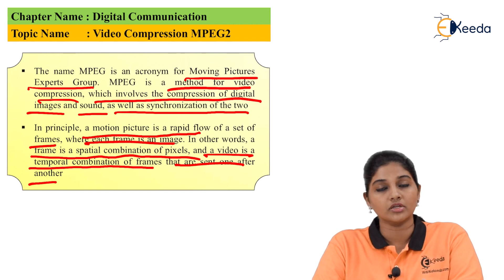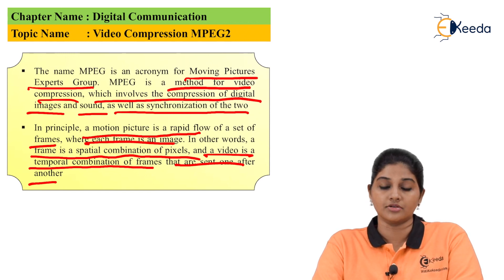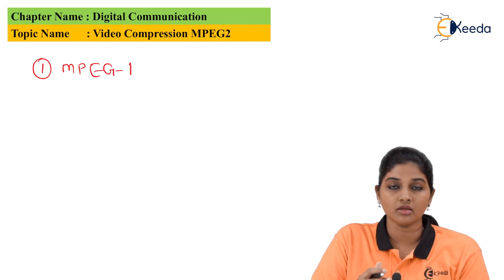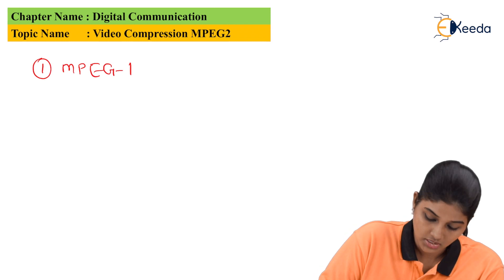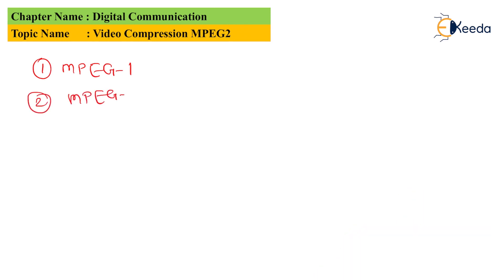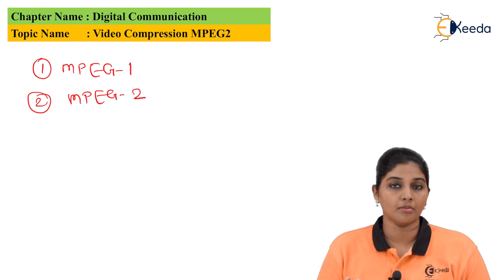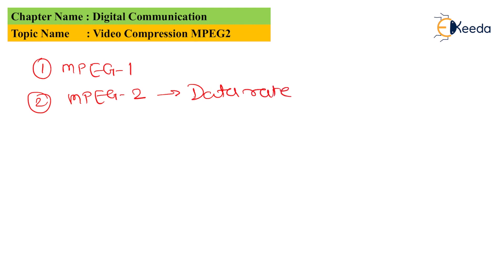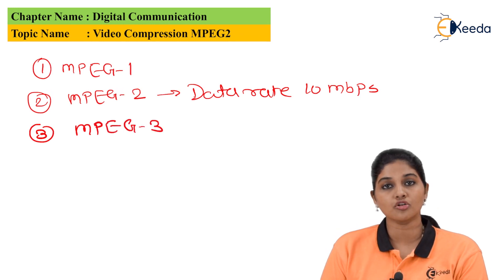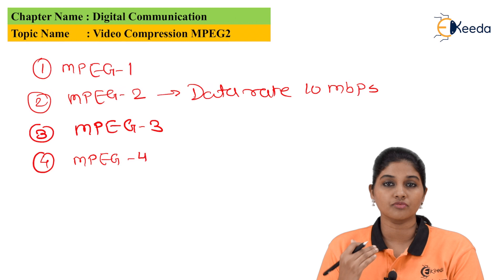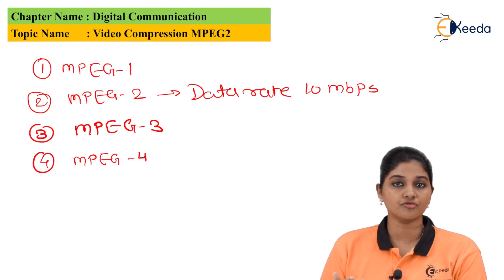The various available MPEG standards are: MPEG-1, which provides intermediate data rate; MPEG-2, which is for moderate or high data rate and provides a data rate of 10 Mbps; MPEG-3, which is used for compression of video in case of high definition TV; and MPEG-4, which provides a very slow data rate in the range of 64 Kbps.